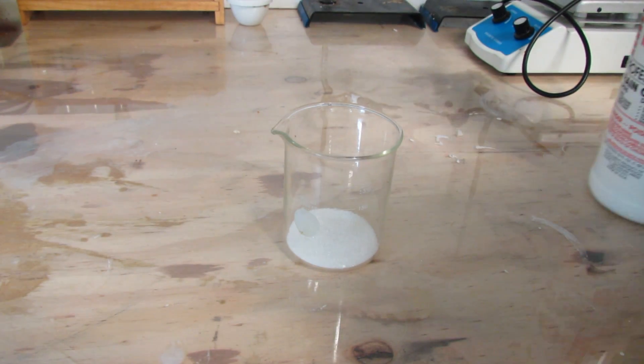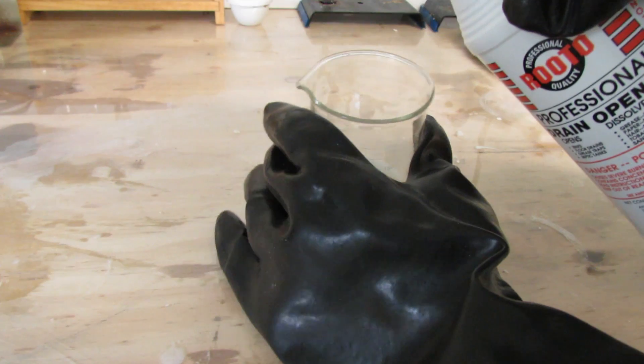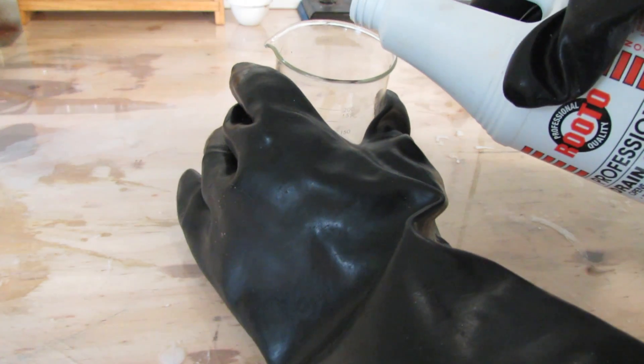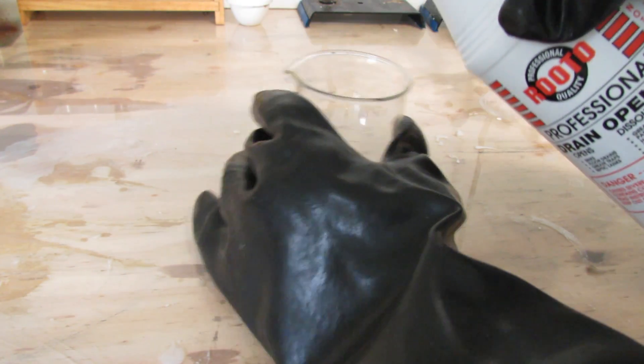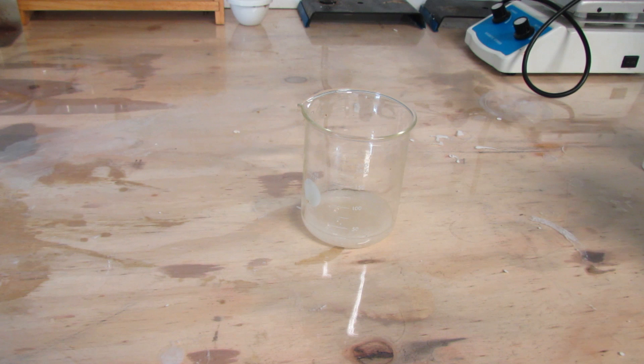Start by filling the bottom of a small beaker with citric acid. Now get out your sulfuric acid, make sure it's concentrated, and cover the citric acid in sulfuric acid. Do this outside or in a fume hood, because this is going to produce carbon monoxide. This should be left to react for a minute or so.